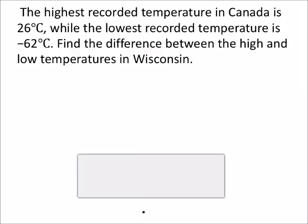The highest recorded temperature in Canada is 26 degrees Celsius, while the lowest recorded temperature is negative 62 degrees Celsius.